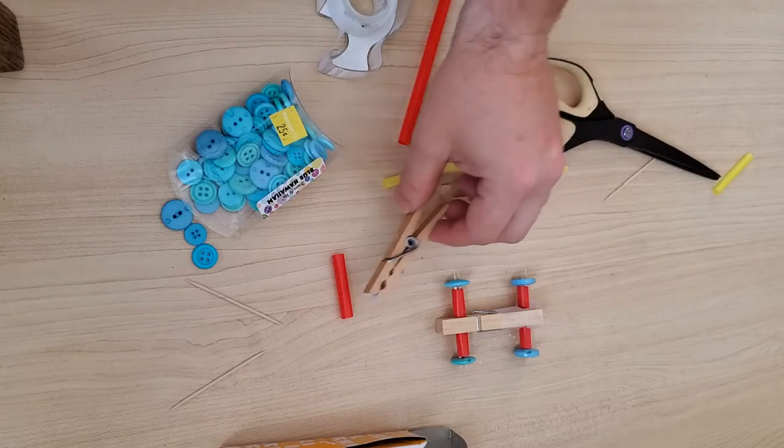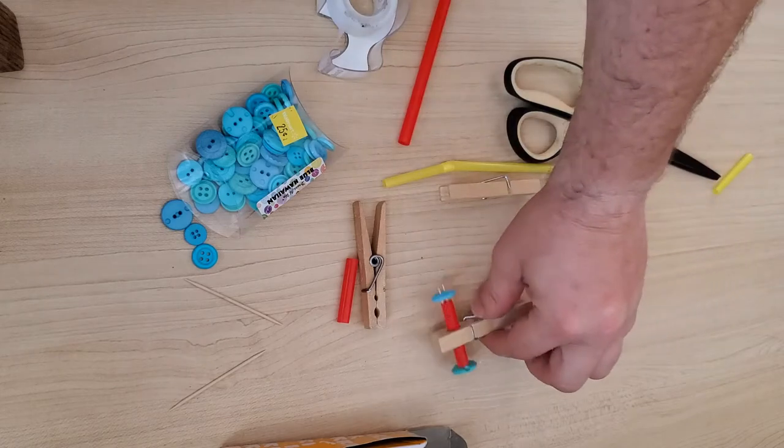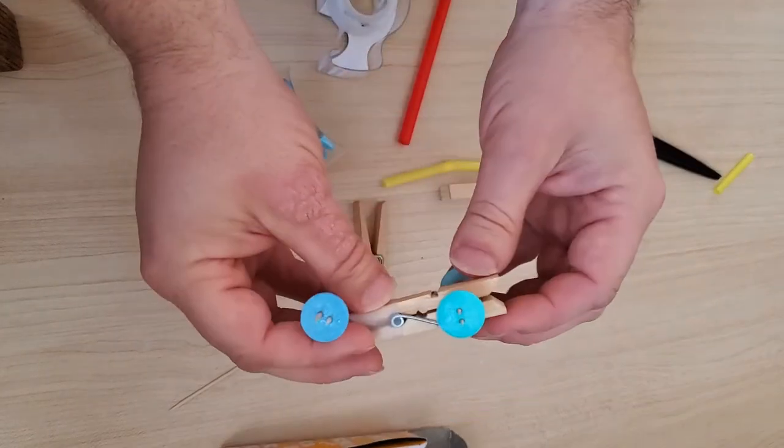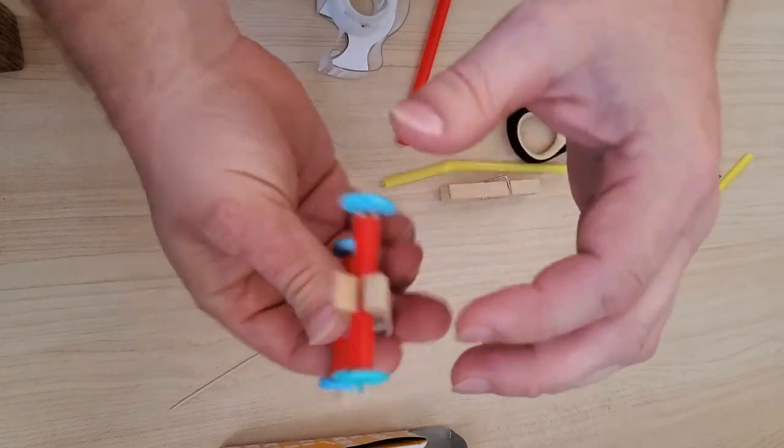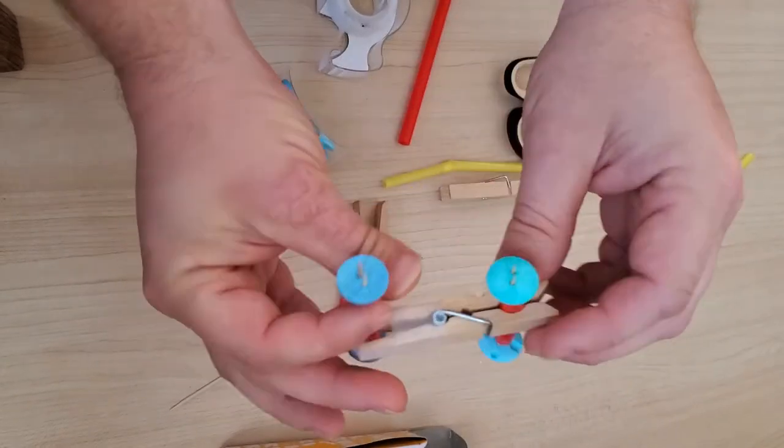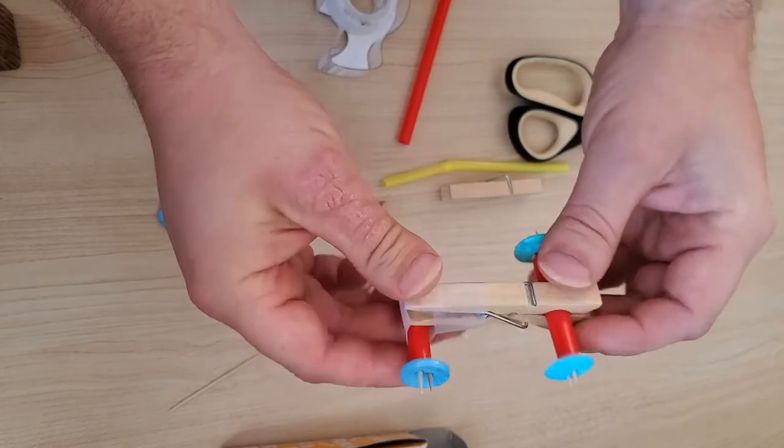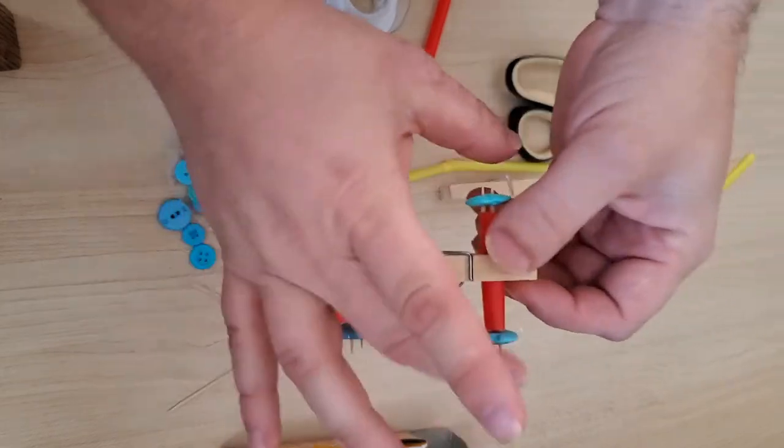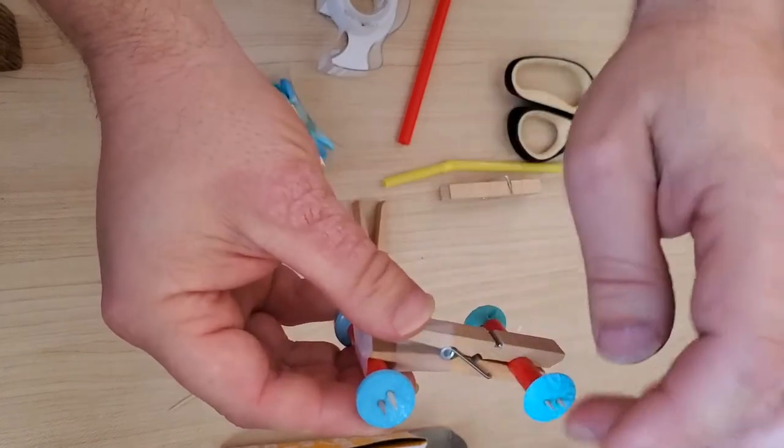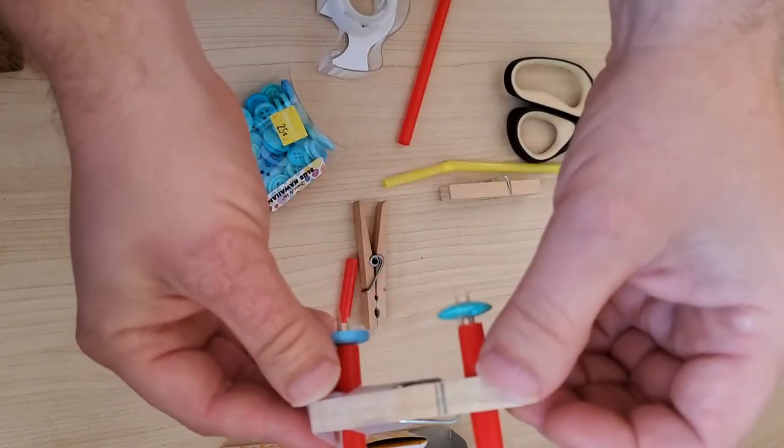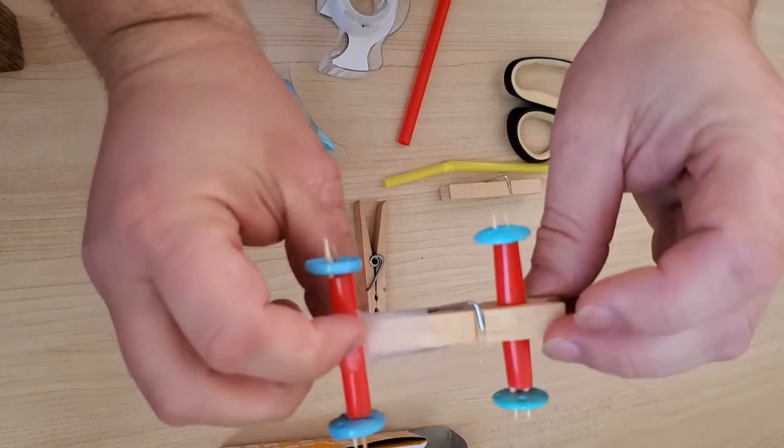To assemble the car, you will need a few different items. You can see that we will need four different buttons that should be the same size for each set of wheels. For this, we would need four toothpicks as well, one paper clip, some tape to adhere it to.